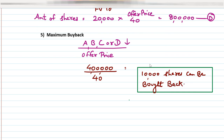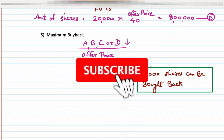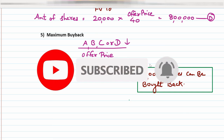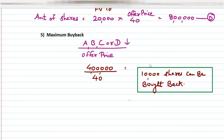This is the working note we have to prepare every time. Once this is clear, the general entries and balance sheet will become much easier, and you can get full marks. I have now covered two questions: the normal fully paid up variety and the partly paid up variety. For partly paid up shares, we consider fully paid up values in the working note and pass two extra journal entries — final call due and final call received. Thank you, do like, share, and subscribe.